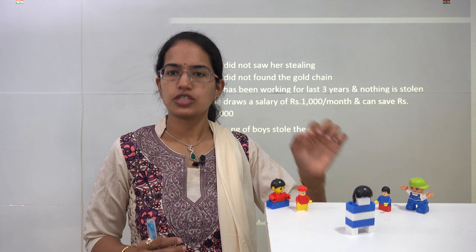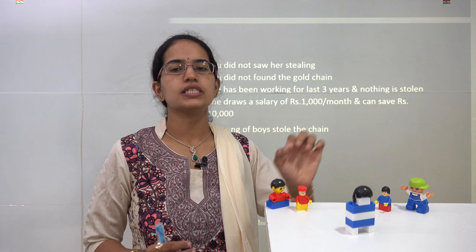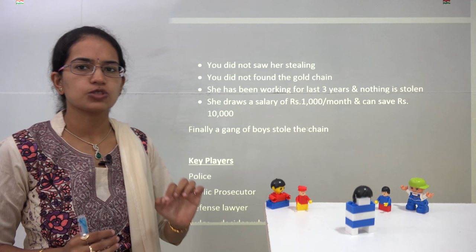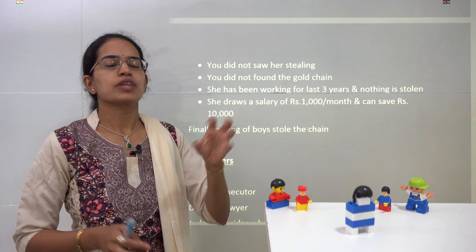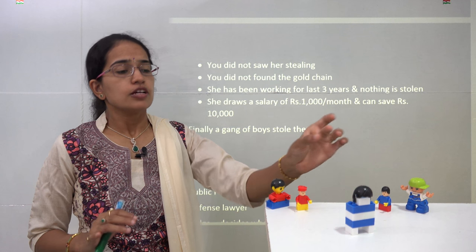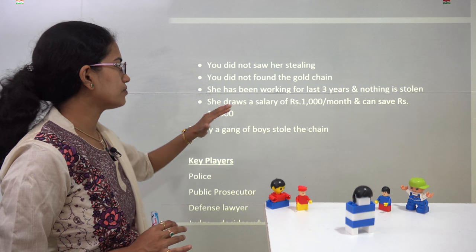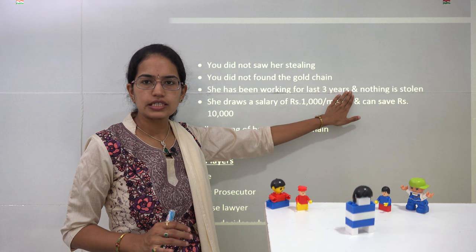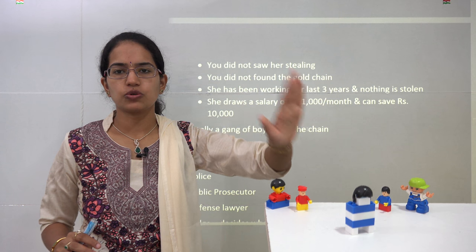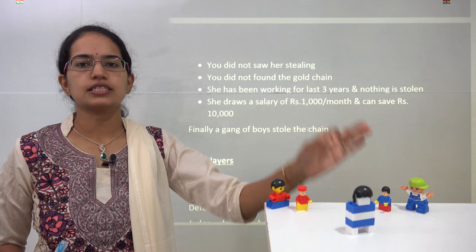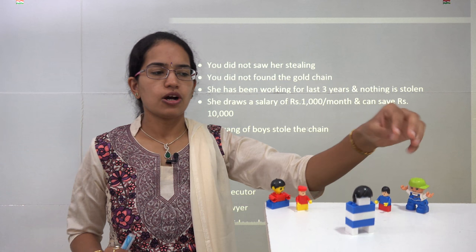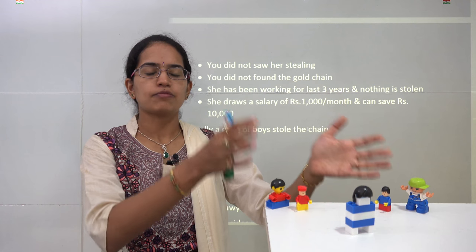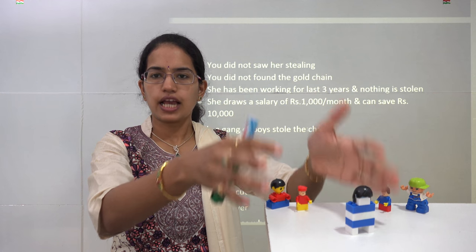If she earns ₹1,000 per month, she can definitely save ₹10,000. Shanti says she wanted to save that ₹10,000 for her developments in the village — for buying a bullock or something. Since you have not found the gold chain and have not seen her stealing, and she has been working for the last 3 years and stolen nothing, how can you say the chain was stolen by her? This lawyer defends Shanti while the other lawyer defends the Shindes, and both present the case to the judge.